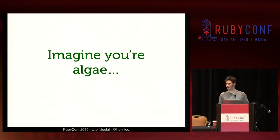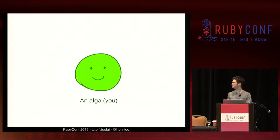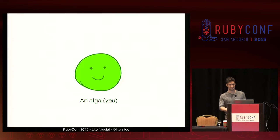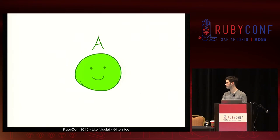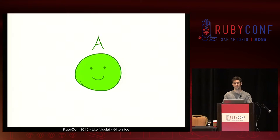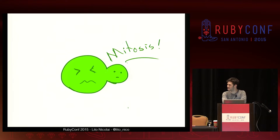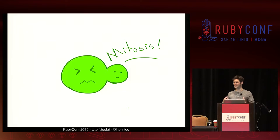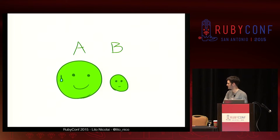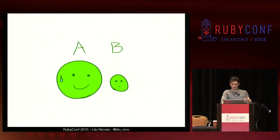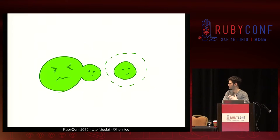Imagine you are algae. Here's you, an alga. We'll call you A for alga. You are going to do what algae do, which is make more algae through a process called mitosis — a fancy way of saying cell division. Once you're done, you'll be the proud parent of a baby alga, which we'll call B for baby. And this process will keep going — you'll keep splitting off, your little baby alga will grow up.